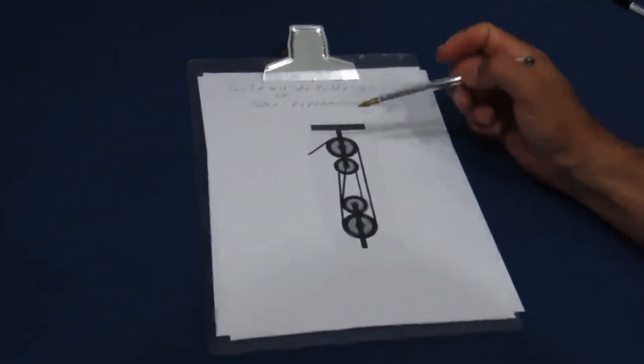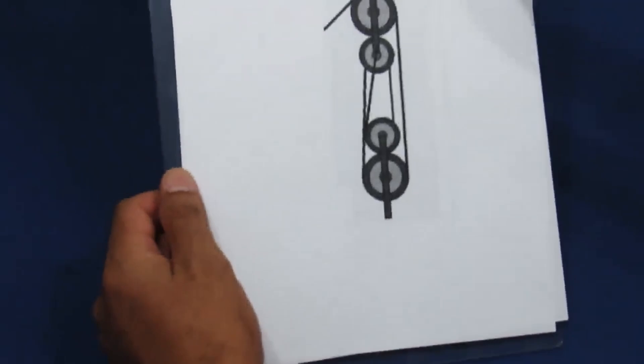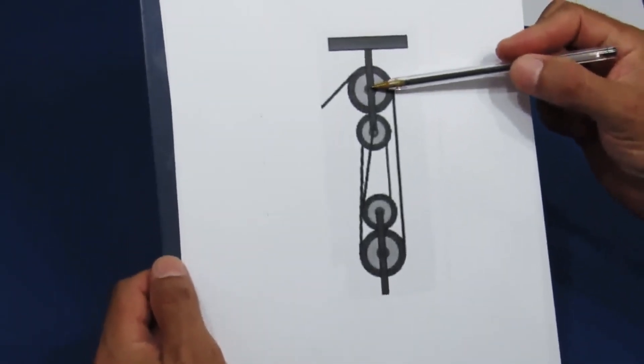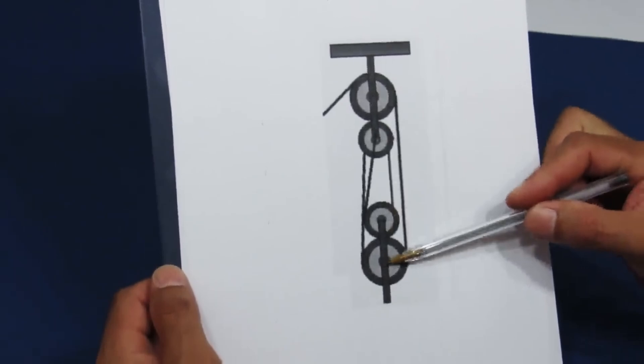It's a pulley system also known as an exponential hoist. A pulley system set up like this here. Two pulleys coupled to each other up here and two down here.